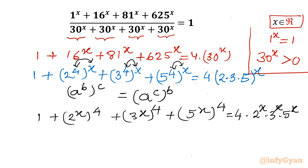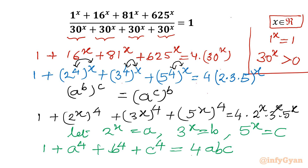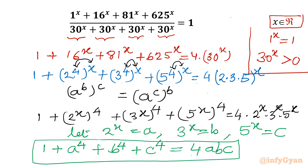Now I will use substitution. Let us consider 2^x equal to a, 3^x equal to b, and 5^x equal to c. Applying this substitution, I will write: 1 plus a^4 plus b^4 plus c^4 equals 4 times abc. So this is the equation for which we have to find the value of x.